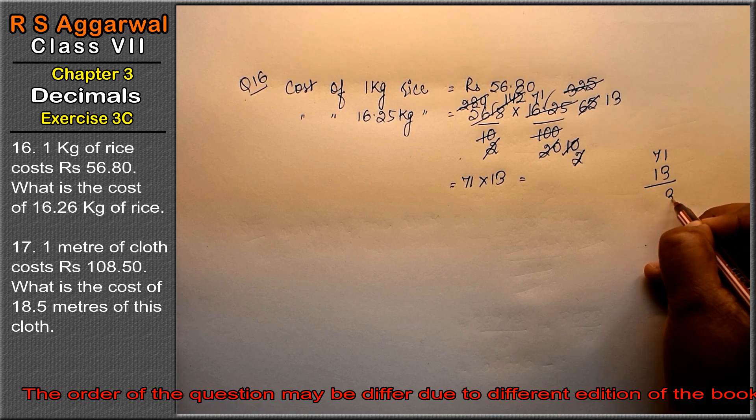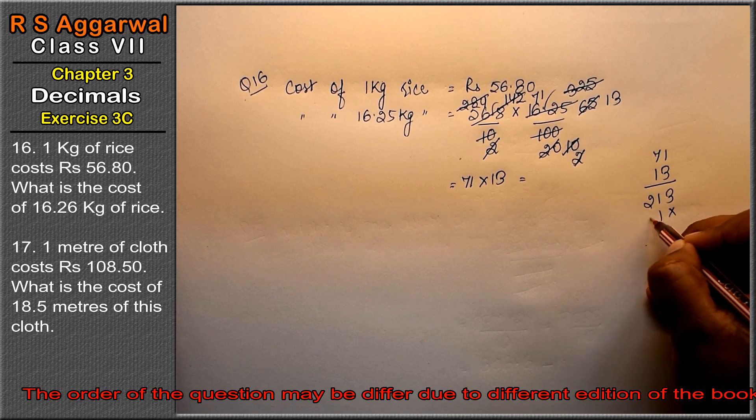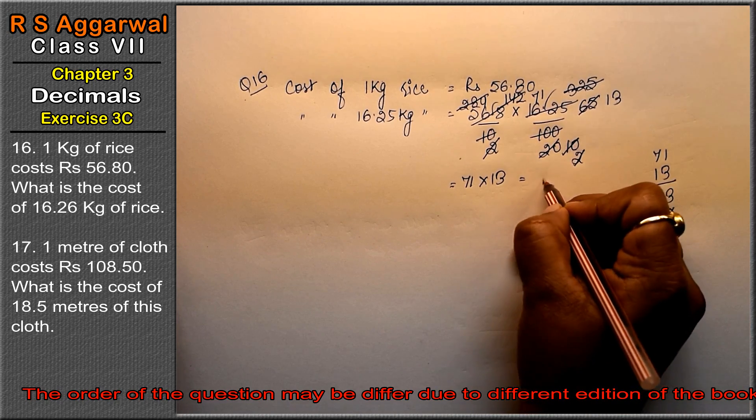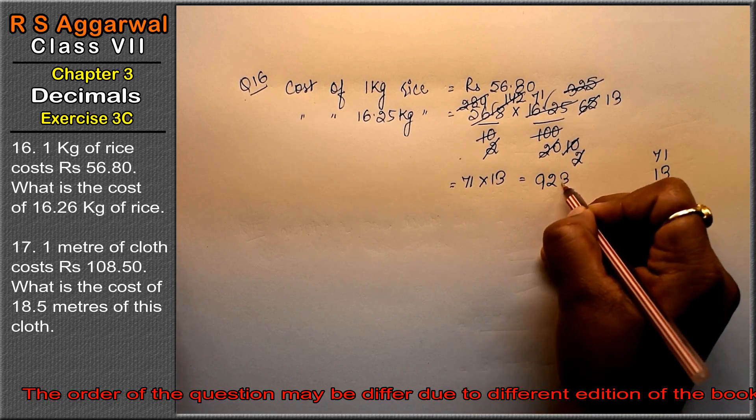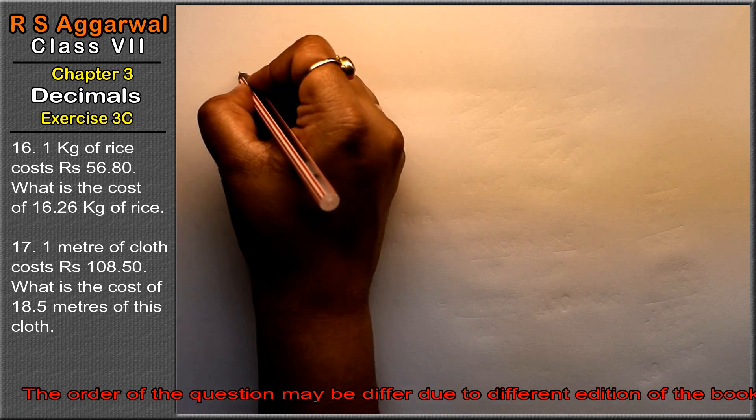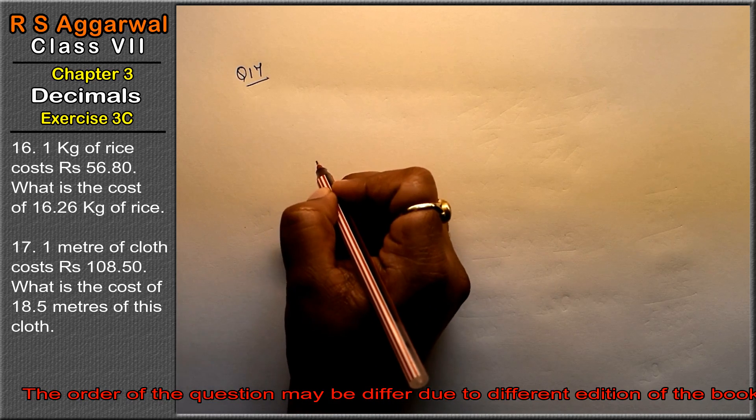So here we got 71 into 13. 3 ones are 3, 3 sevens are 21, carry 2, gives 23. 923 rupees is the answer.